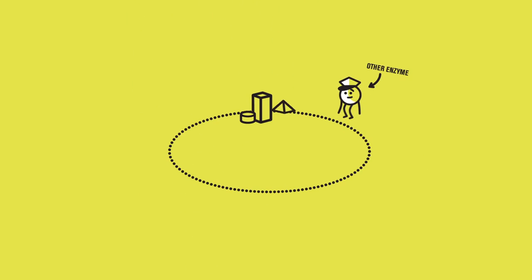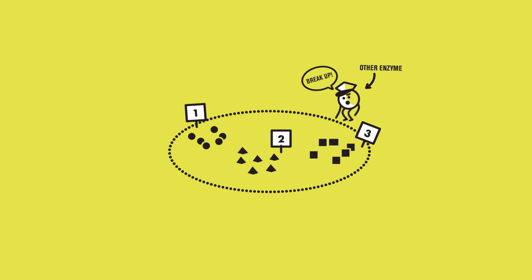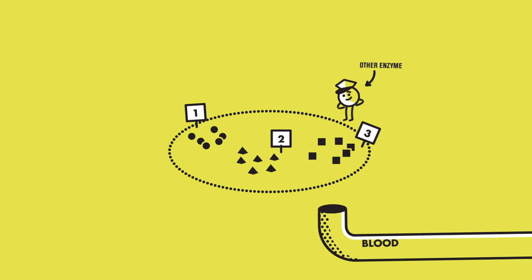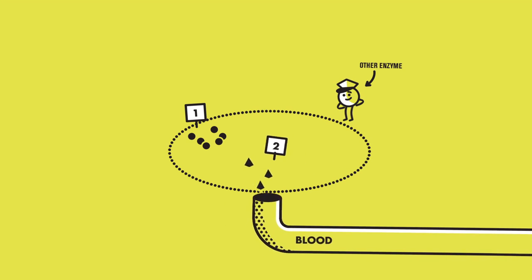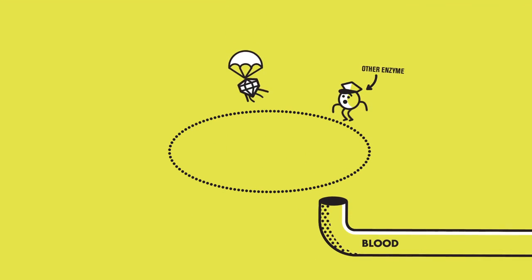In your small intestine, other enzymes mobilize to break down any remaining carbs, fat, and protein into even smaller molecules that are then transported to your blood. But you can't process the oligosaccharides because